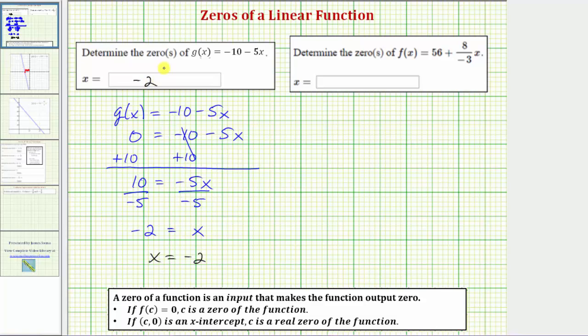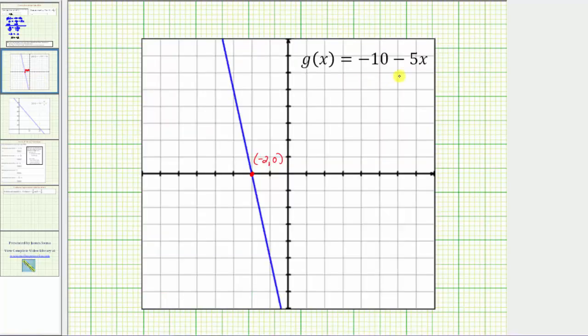Before we look at the second example, let's verify this graphically by looking at the graph of g(x). Notice how the function g(x) crosses and intersects the horizontal axis or x-axis at this point here, where the x value is negative two.